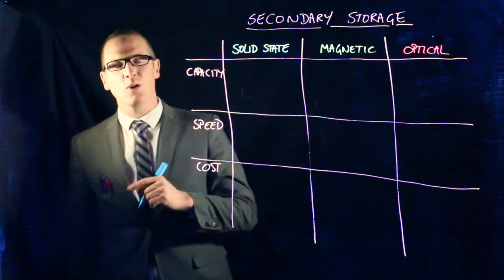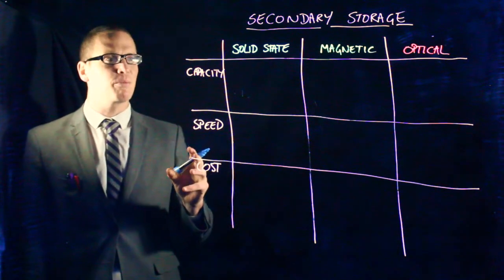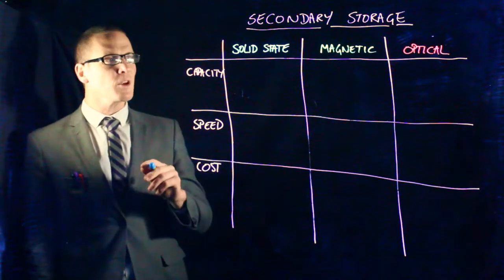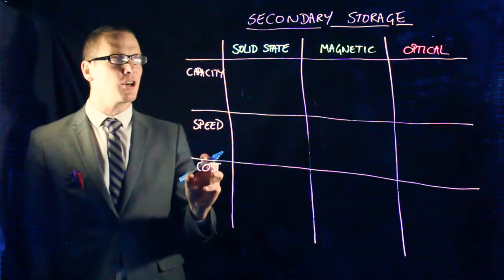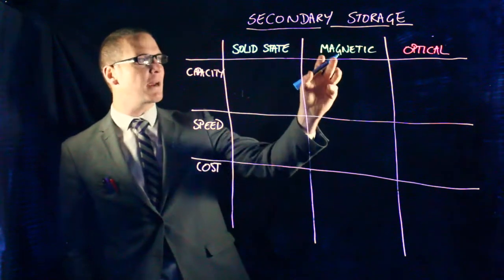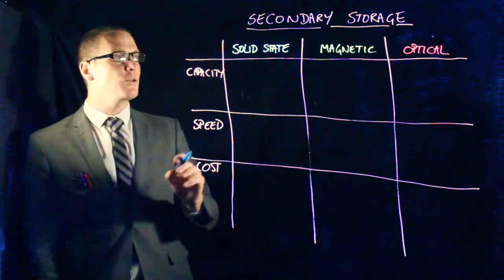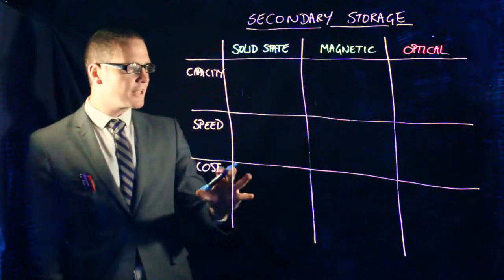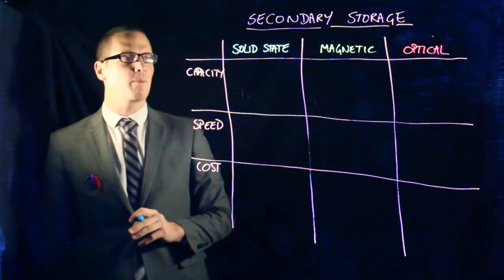Now, in the exam, you always get asked questions about which is going to be the most appropriate in particular situations. So we're going to go through the capacity, the speed, and the cost of each of solid state, magnetic, and optical, comparing them so that in different situations, you can say which one would be most appropriate. Sorry about the wonky table we got going on here, but it's going to be the easiest way to present this information.